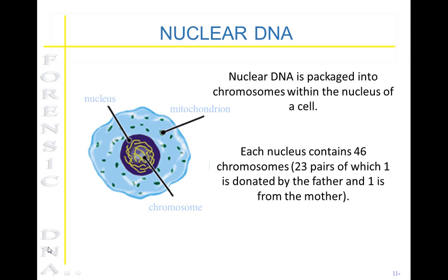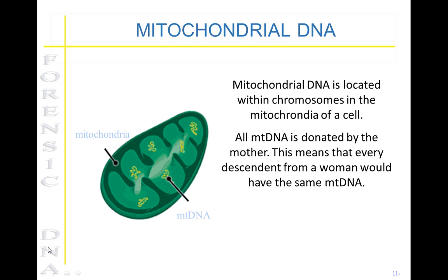Nuclear DNA is packed into chromosomes within the nucleus of a cell. Each nucleus contains 46 chromosomes — 23 pairs, of which one is donated by the father and one is donated by the mother. There is also mitochondrial DNA, which is located within the mitochondria of a cell. All mitochondrial DNA is donated by the mother, meaning every descendant from a woman would have similar mitochondrial DNA.